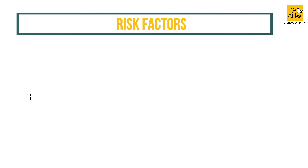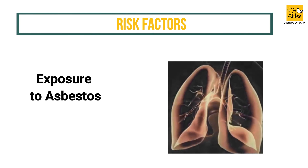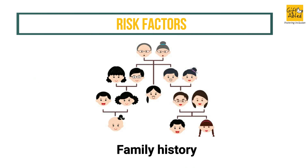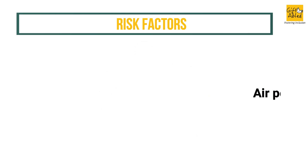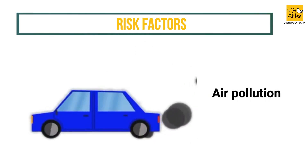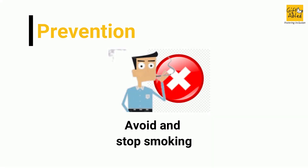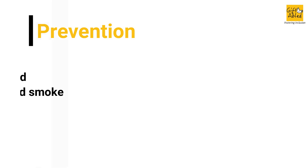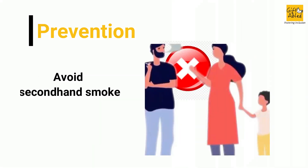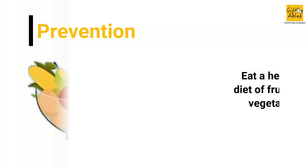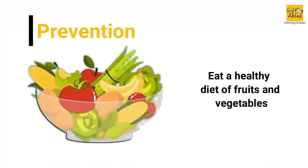Other risk factors include exposure to asbestos, family history, and air pollution. Prevention: avoid and stop smoking, avoid secondhand smoke, and eat a healthy diet of fruits and vegetables.